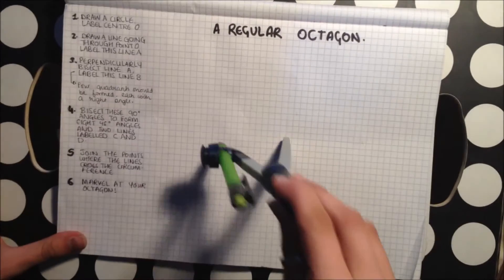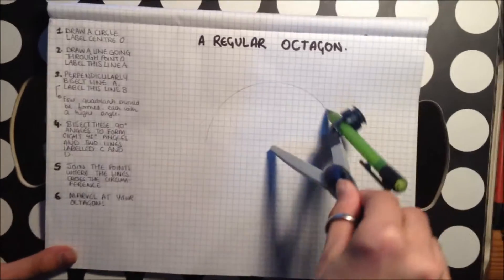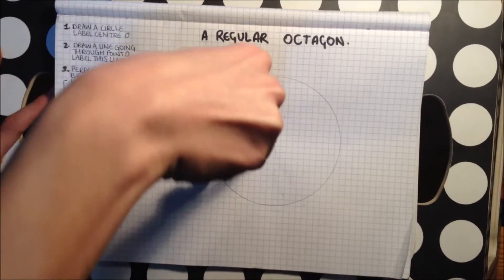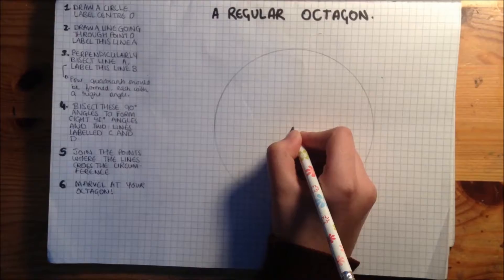Firstly, start off by making a circle using a compass in your book, and label the centre point of the circle O.